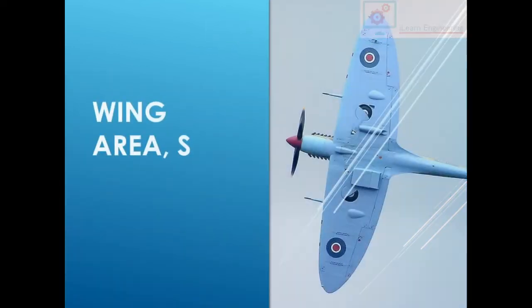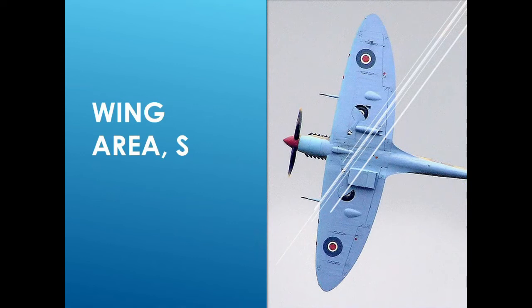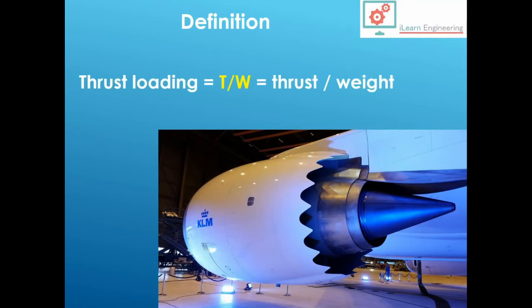We'll also be considering another parameter, capital S, which is used to represent the wing area, the planform area of the wing. So from those we have a definition of thrust loading, which is defined as the thrust to weight ratio. For units, you will notice this is dimensionless because thrust is a force and weight is a force, both measured in newtons.